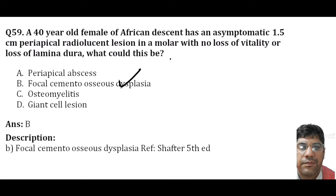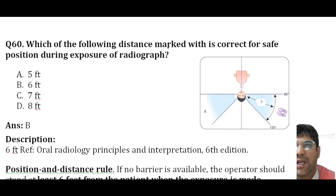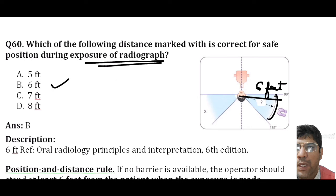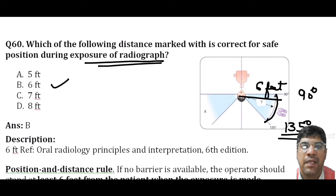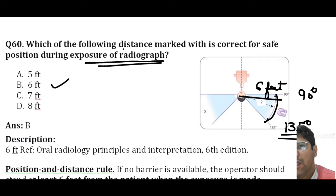Regarding the correct distance for safe positioning during radiograph exposure, the distance should be six feet and the angulation should be 90 to 135 degrees. According to the position and distance rule in radiography, if no barrier is available, the operator should stand at least six feet away from the patient while making the exposure, minimizing radiation exposure to the operator while still allowing necessary radiographic images to be obtained.